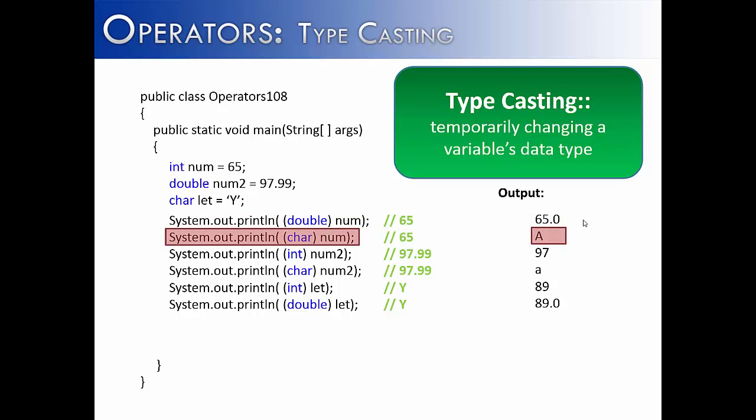On the next line, we're starting with 65 again, but instead of going to a double, we're going to a character. When we change the integer 65 into a character, it's going to change it into its ASCII value or Unicode value, which is capital A.